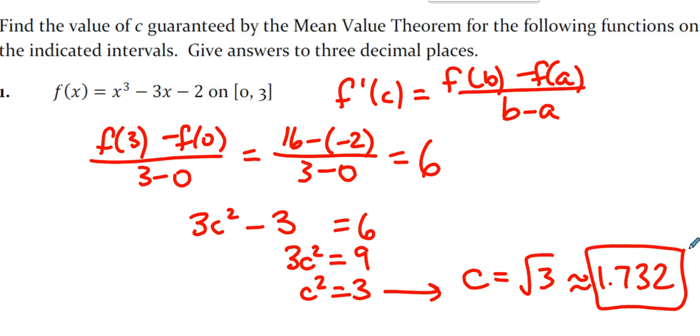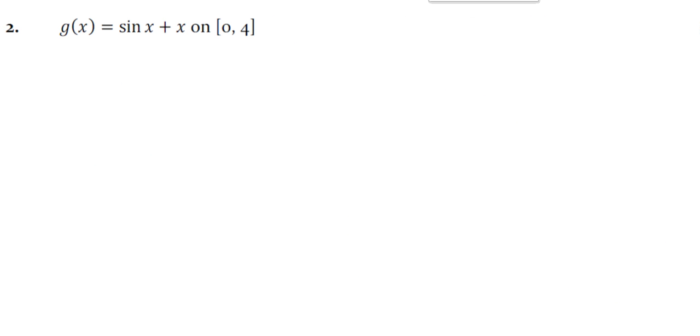This is the sort of thing that you need to know how to crank out. We know what the mean value theorem says. We can find the slope of the secant. We set the derivative equal to the slope of the secant and we solve. That's what's going on here.